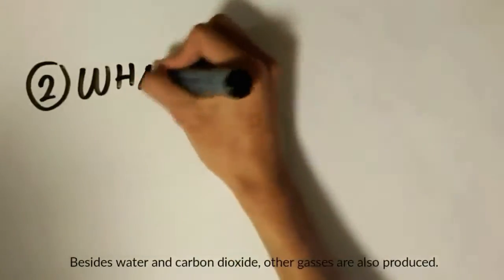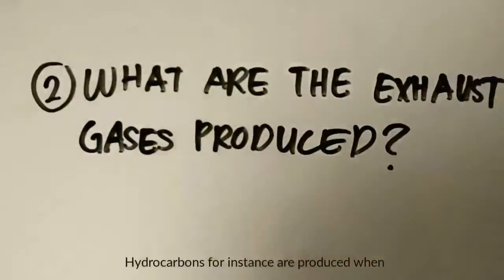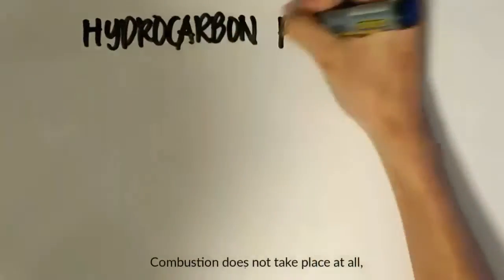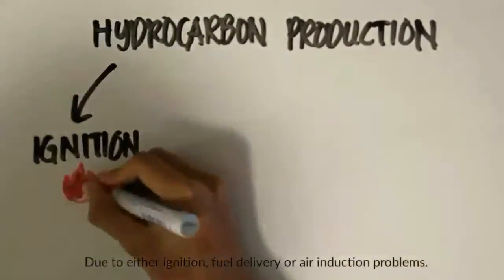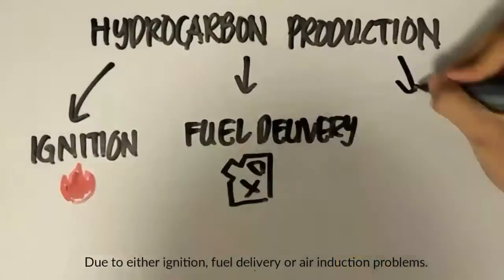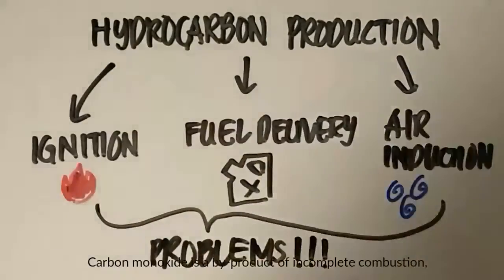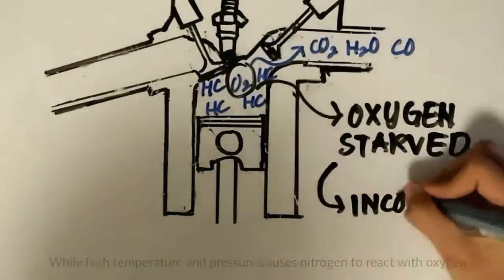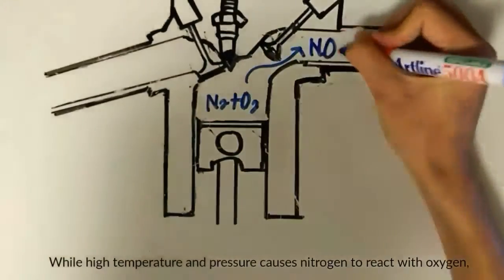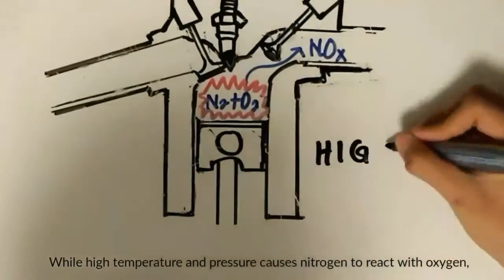Instead of water and carbon dioxide, other gases are also produced. Hydrocarbons are produced when combustion does not take place at all due to either ignition, fuel delivery, or air induction problems. Carbon monoxide is a by-product of incomplete combustion, while high temperature and pressure causes nitrogen to react with oxygen to form various oxides of nitrogen.